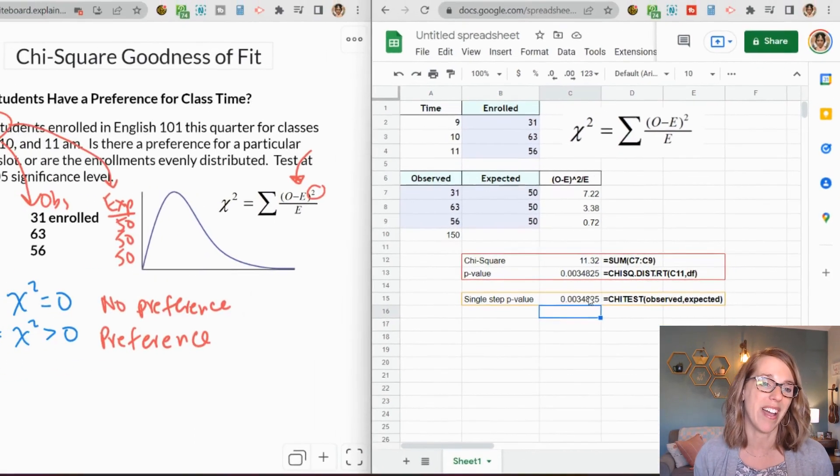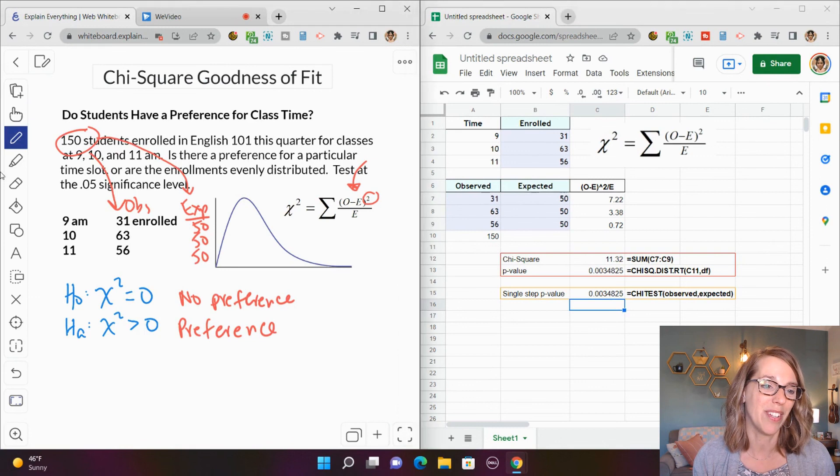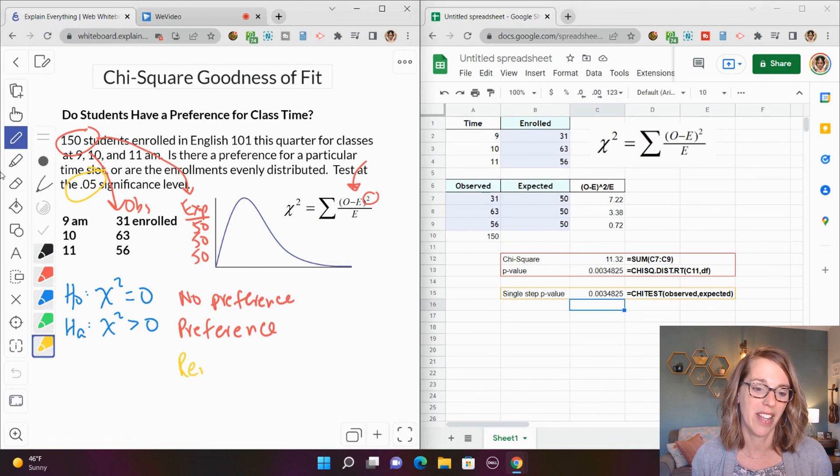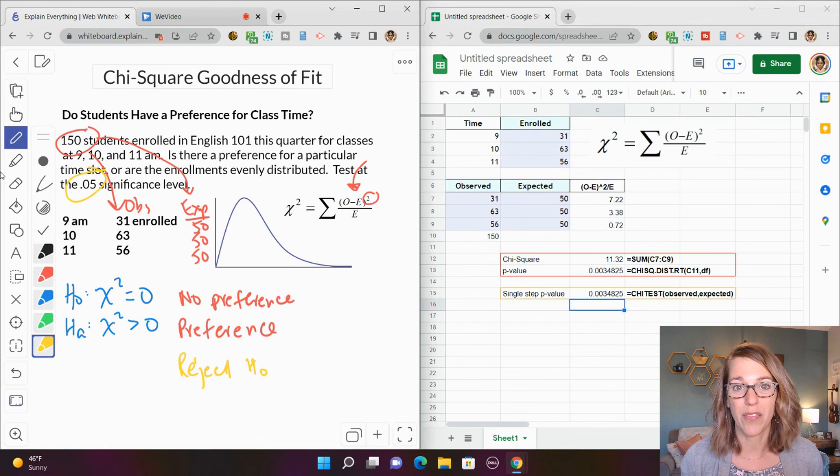Now again, my p-value is smaller than my significance level, which means that I would in fact reject the null hypothesis and I would conclude that we've got a significant preference. Any questions that you've got for me, go ahead and put those down below. I really look forward to hearing from you. And again, check out my other videos if you want to see how to do this either by hand or using the graphing calculator. Thank you so much for watching.